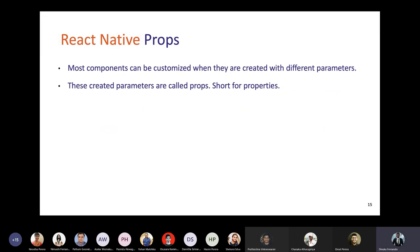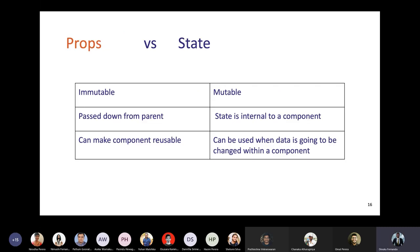Properties are used to customize components when they are created with different parameters. Unlike state which is stored inside a single component, properties stored in your application can be used across whatever component you need. Properties are immutable and are passed down from the parent. For example, if you call an API in a login page and receive values, you store those in a Redux store, and then use those property values within your components.